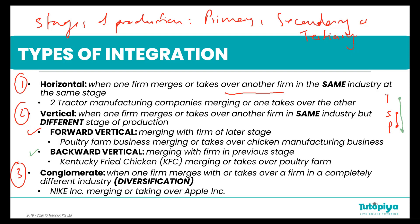Finally, a conglomerate is when one firm merges with or takes over a firm that is in a completely different industry, also known as diversification. This is important in business to ensure that we are able to spread the risk. The profits earned in one industry will compensate for the losses incurred in another industry — the main advantage of diversification. For example, Nike Incorporated merging with or taking over Apple.